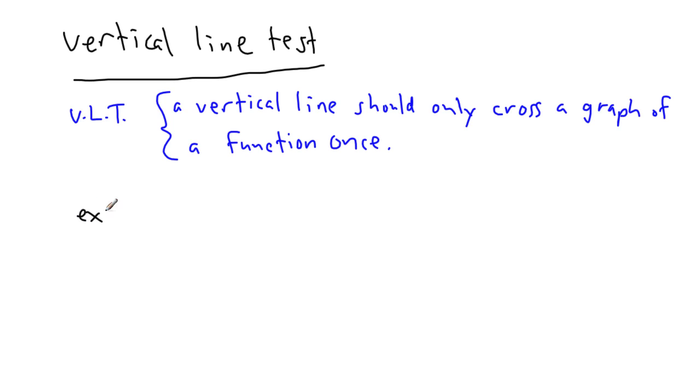Let me give you an example. Let's say I have a graph with y and x, and I draw some sort of weird line like this. No matter where I try to draw a vertical line—if I draw one here or here or here—notice that my line only intersects this curvy graph one time. So is it a function? Yes.